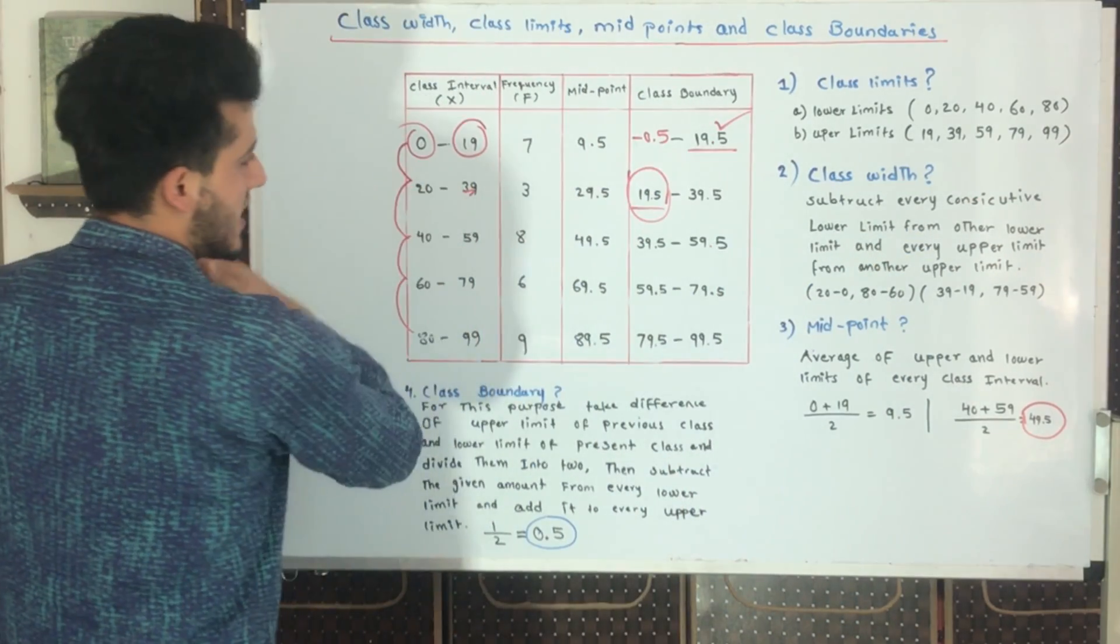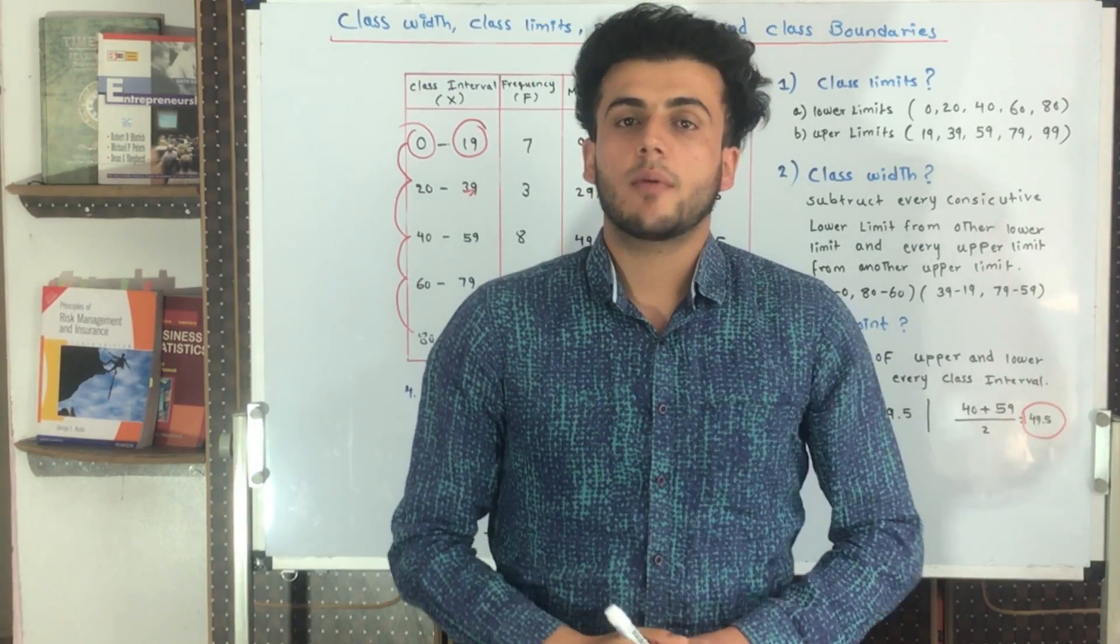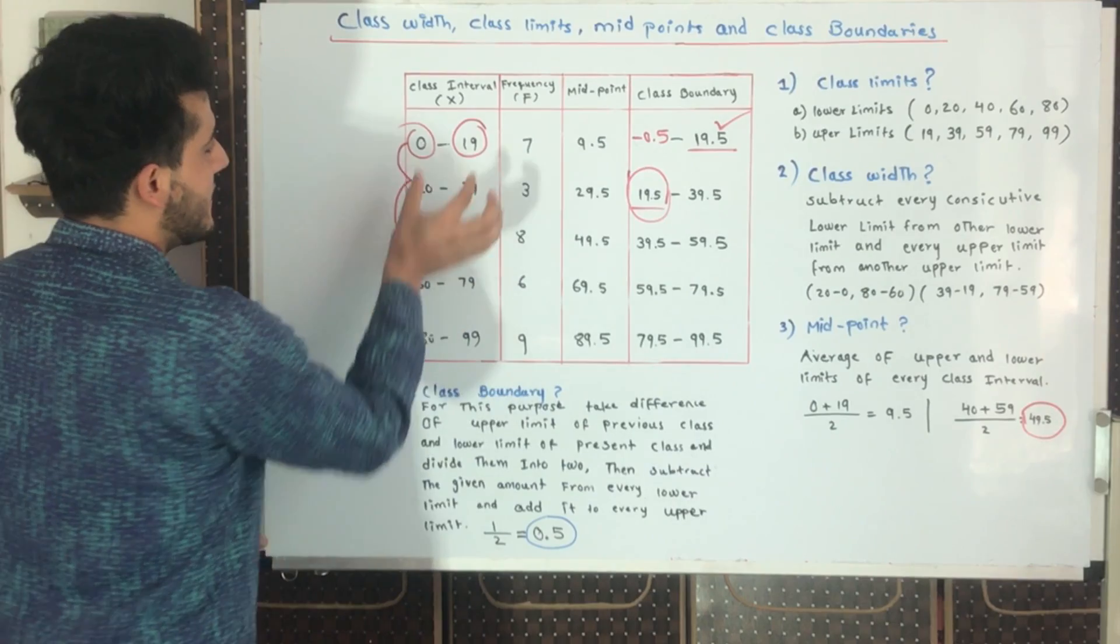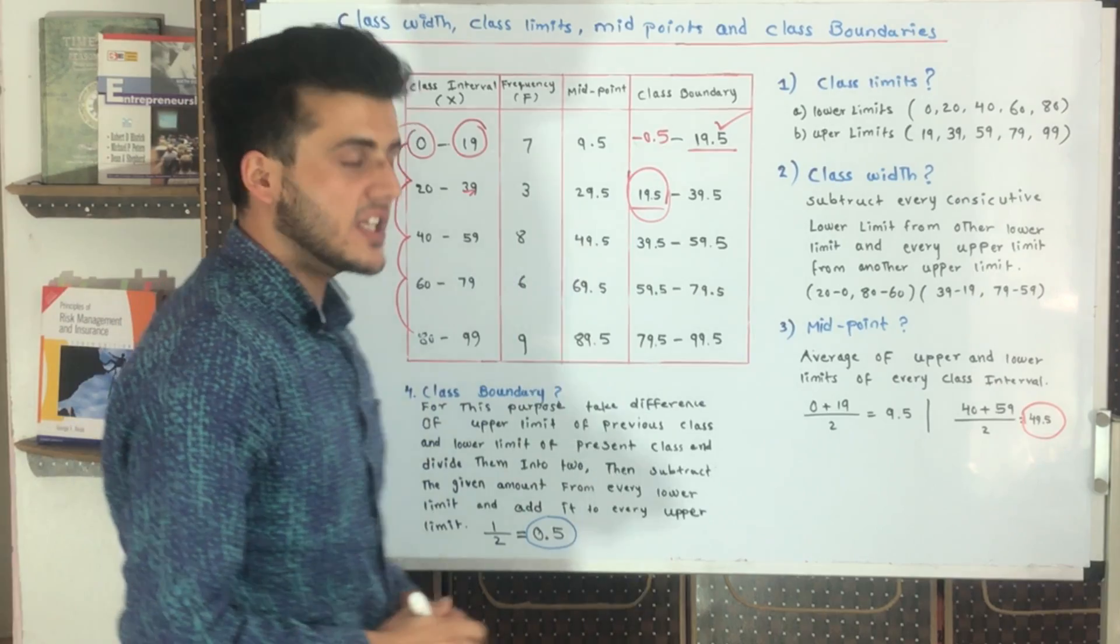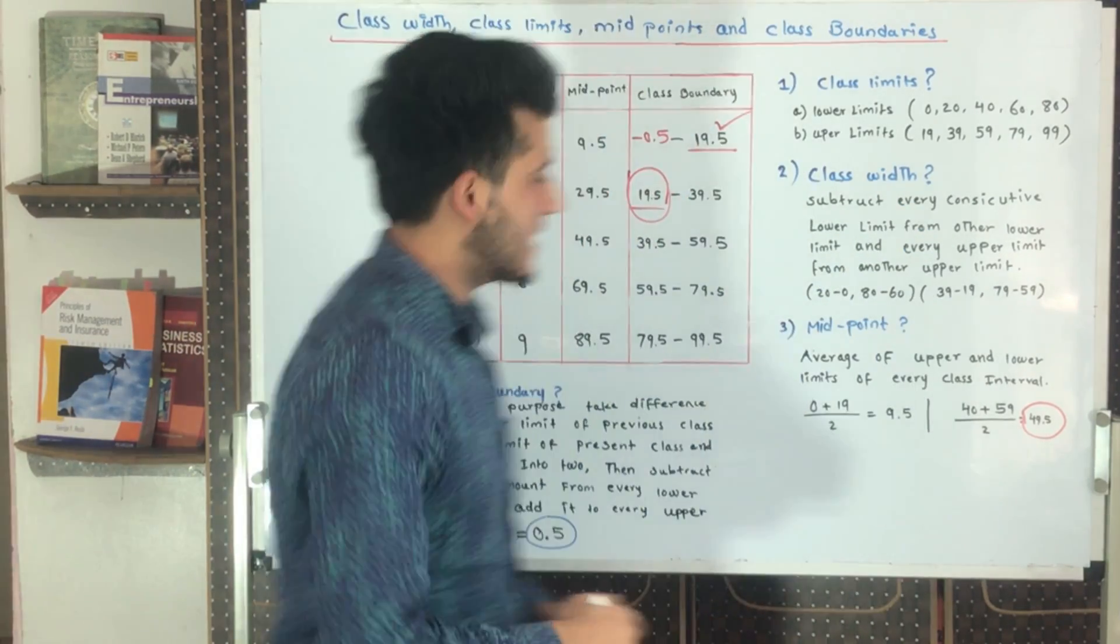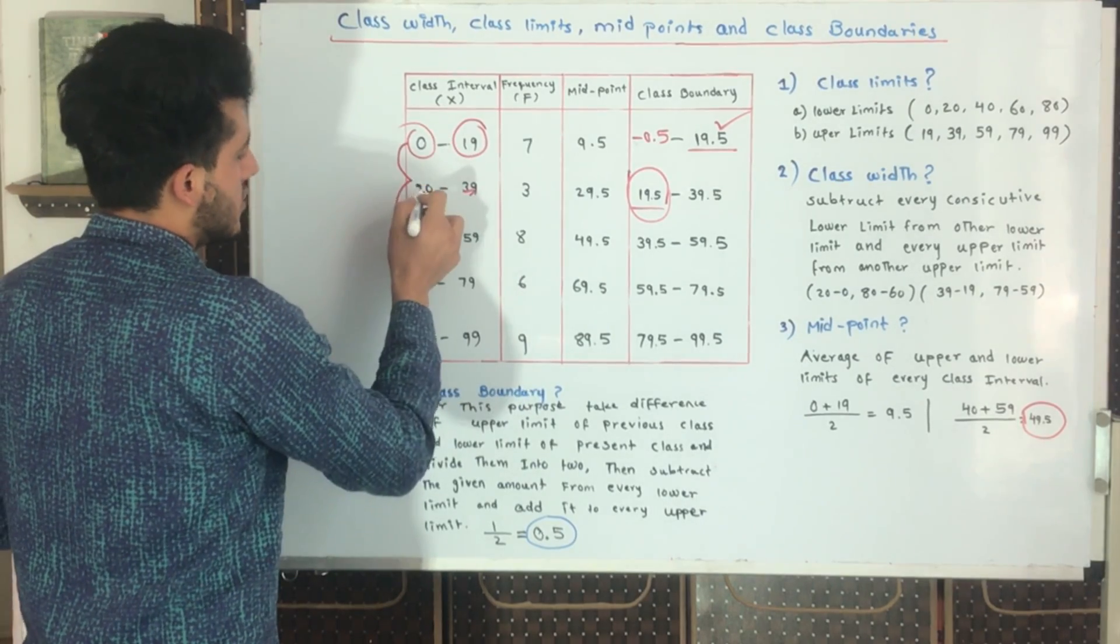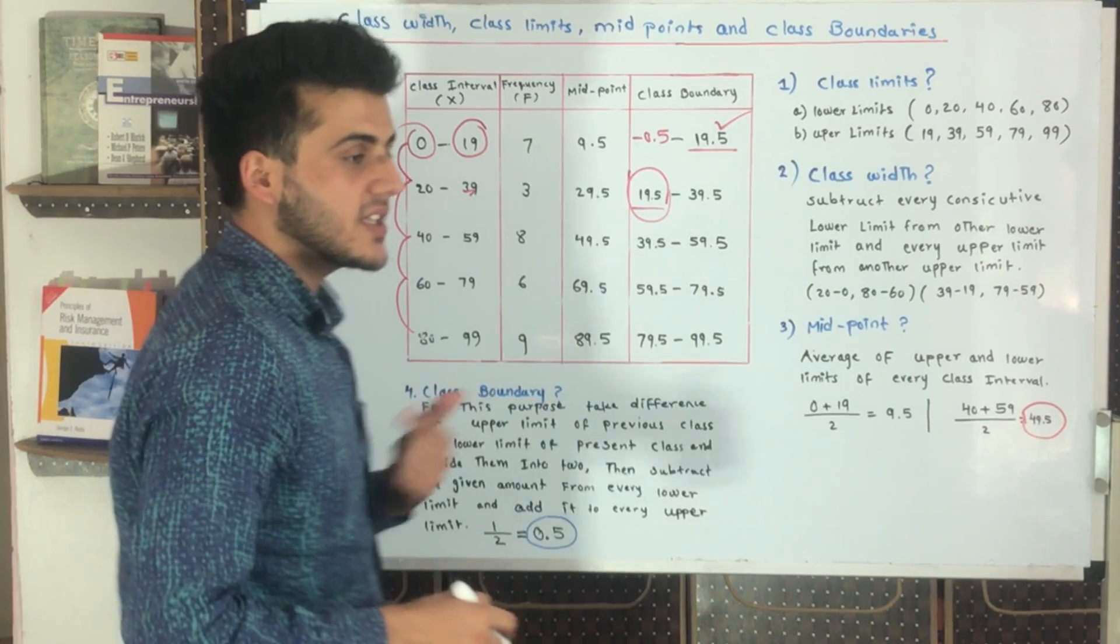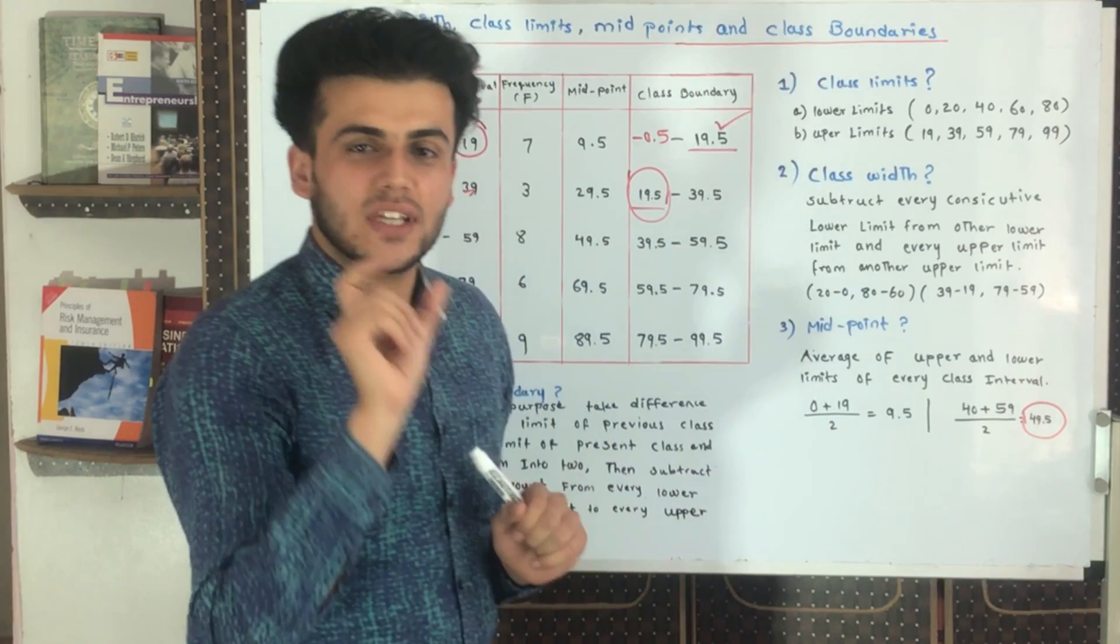The second point is about class width. What is class width? Class width shows the difference between every class interval. We can take it horizontally and vertically, but mostly we take it vertically. The difference between 0 to 20, 20 to 40, 40 to 60, 60 to 80 - when we find the difference between them, we are finding the class width, the class size.